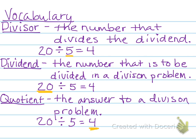First one, divisor, the number that divides the dividend. So the divisor in 20 divided by 5 equals 4, the divisor is 5. The next vocabulary term is the dividend, the number that is to be divided in a division problem. So again, 20 divided by 5 equals 4, 20 would be our dividend. And then quotient, the answer to a division problem. So again, if you look at 20 divided by 5 equals 4, the quotient would be 4. Feel free to pause.